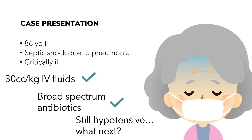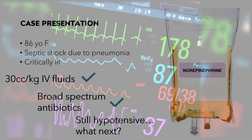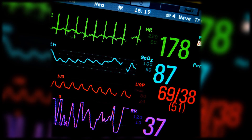Most people would start vasopressors such as norepinephrine. You start the norepinephrine and her blood pressure doesn't change at all. So you increase the norepinephrine dose. Now her blood pressure is 69 over 38. What just happened? Why would a septic patient get worse on vasopressors? And what do you do now?